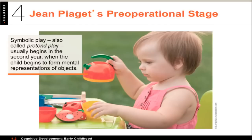Preschoolers' drawings are symbols of objects, people, and events in their lives. Symbolism is also expressed as symbolic or pretend play, which requires a certain level of cognitive sophistication based on the use and recollection of symbols. Pre-operational children also have numerous mental limitations that reflect cognitive immaturity.